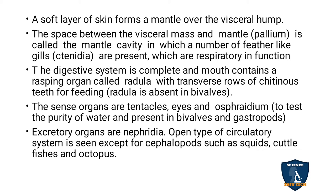The digestive system is complete, and the mouth contains a rasping organ called the radula, with transverse rows of cutaneous teeth for feeding. The radula is absent in bivalves but present in univalve organisms. The digestive system starts from the mouth and ends at the anus. The radula teeth are arranged in two rows and are used for taking food into the body. The sense organs are tentacles, eyes, and osphradium.